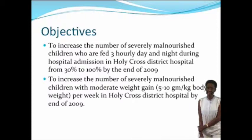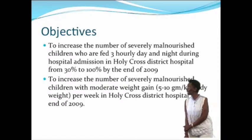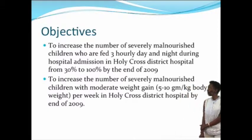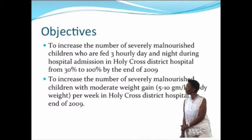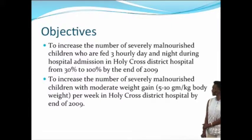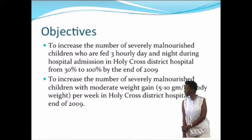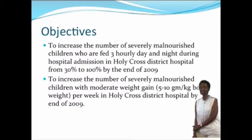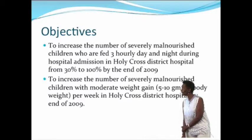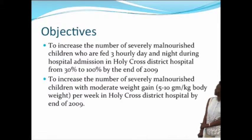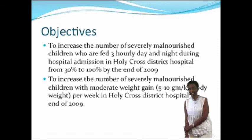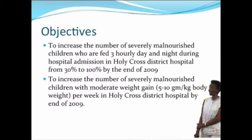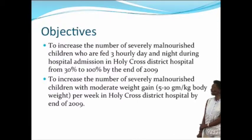The objectives, on the other hand, are specific. For example: to increase the number of severely malnourished children who are fed three-hourly, day and night, during hospital admission in Holy Cross District Hospital from 30% to 100% by the end of 2009. This is a SMART objective — it is specific, giving you a place and a population. It is measurable, increasing from 30% to 100%, and it is time-bound to 2009.